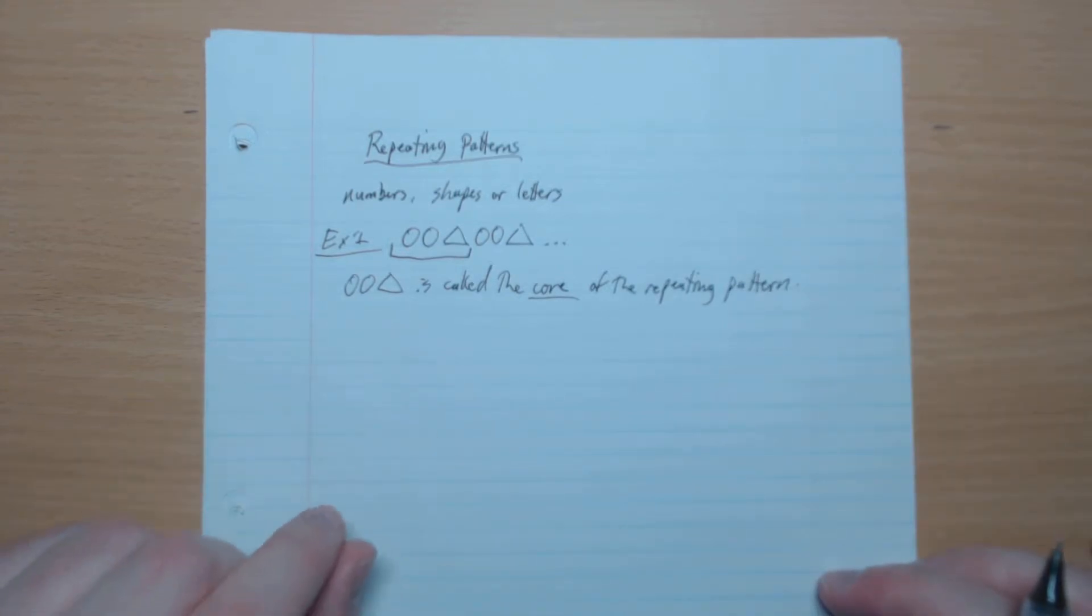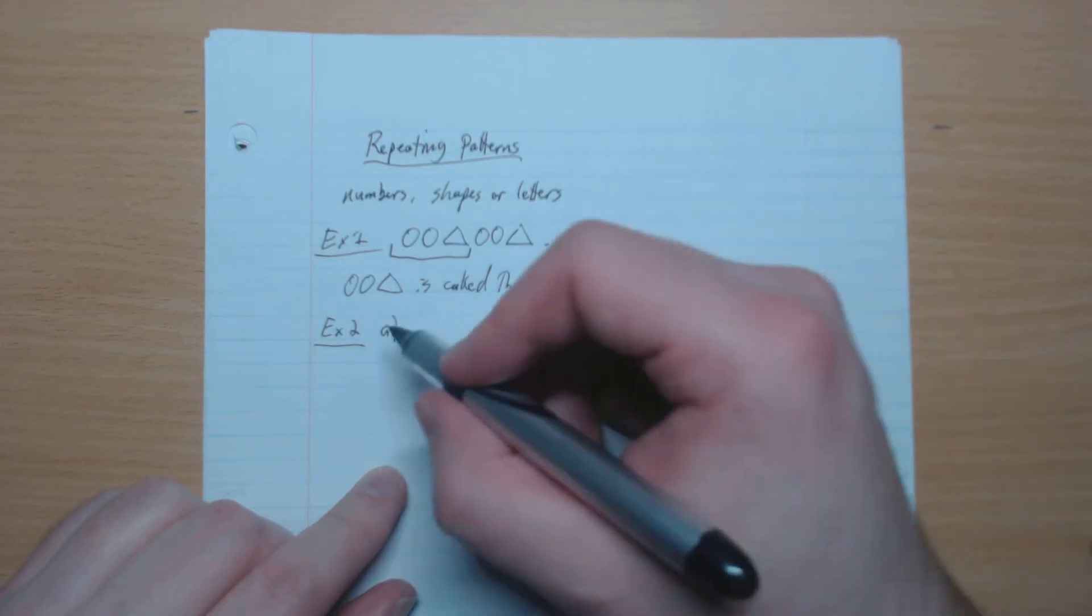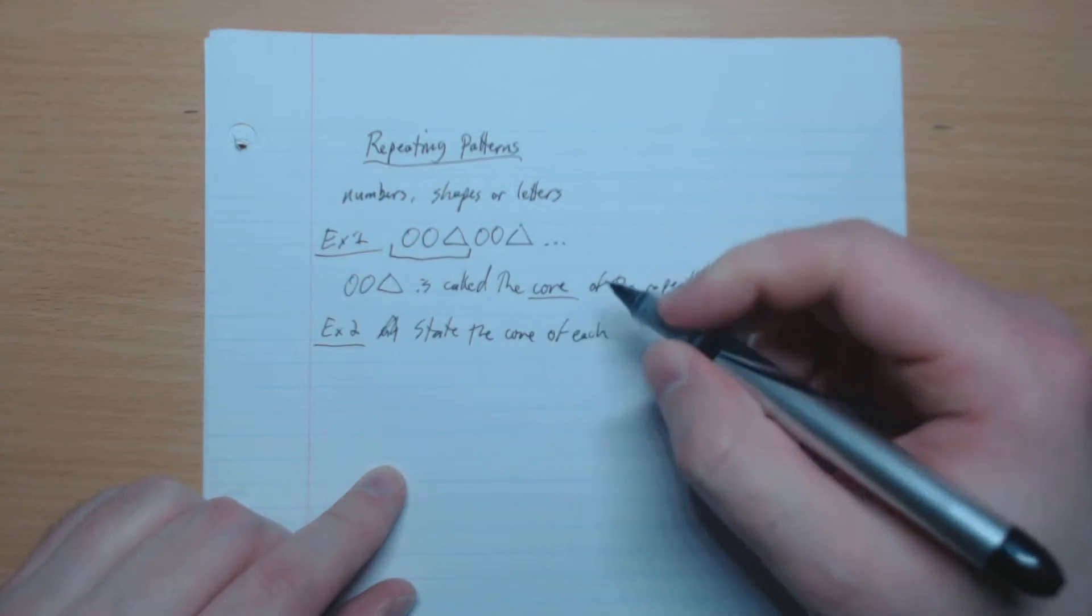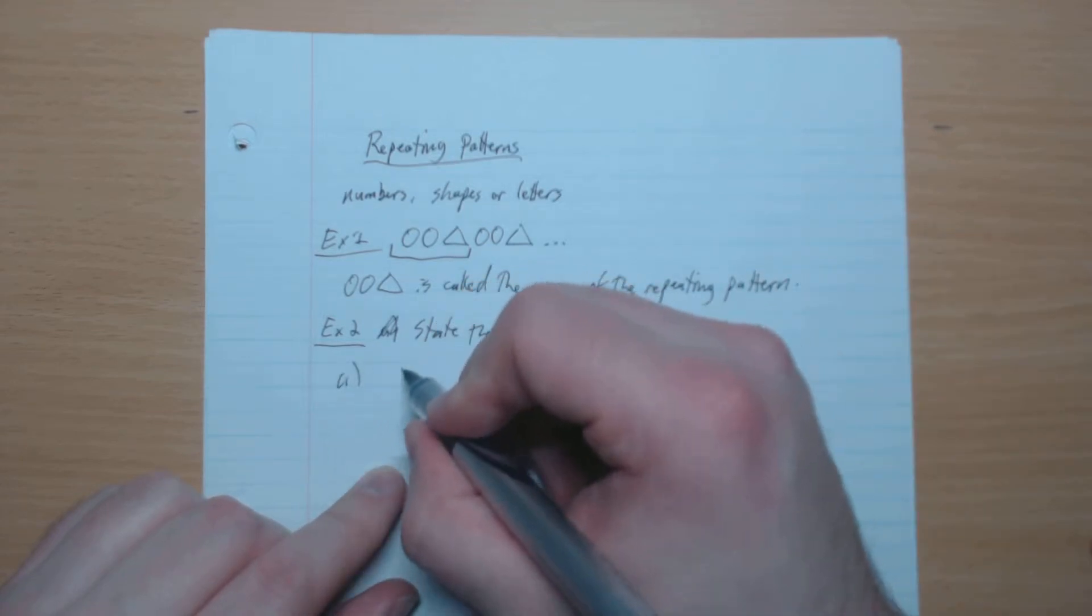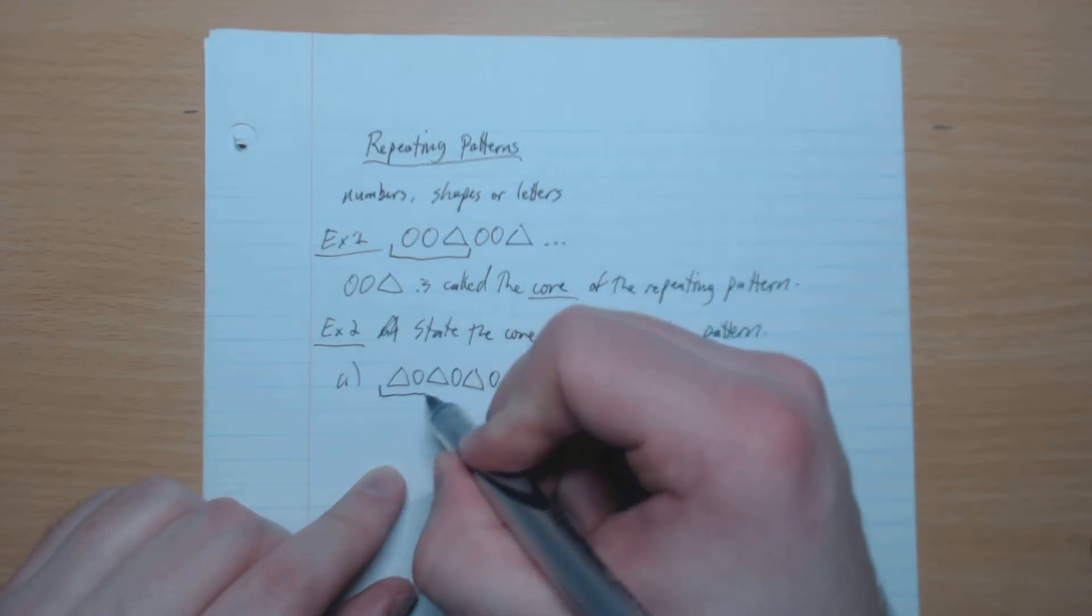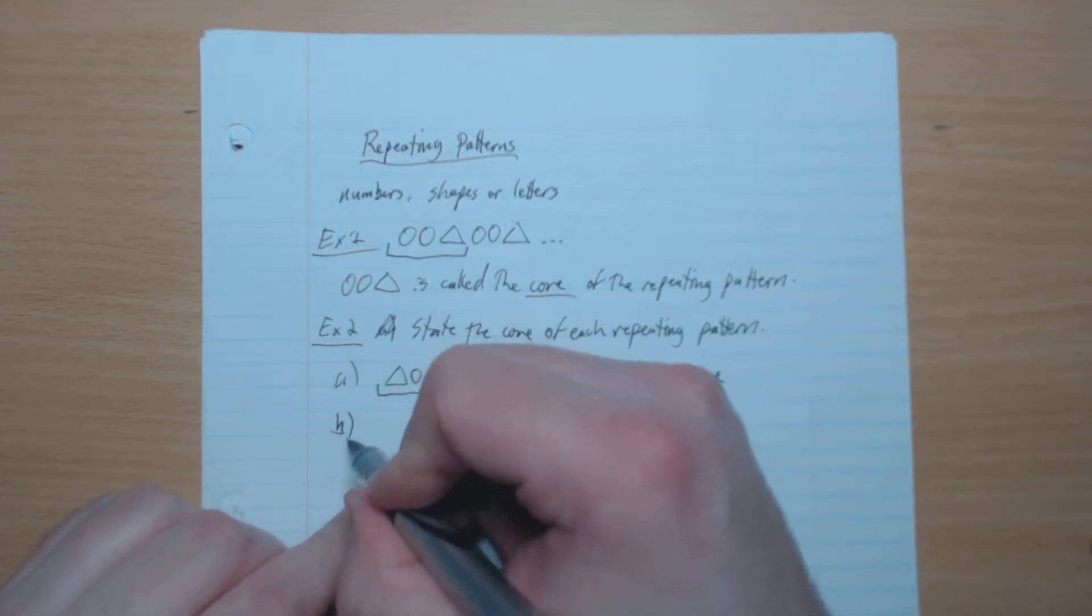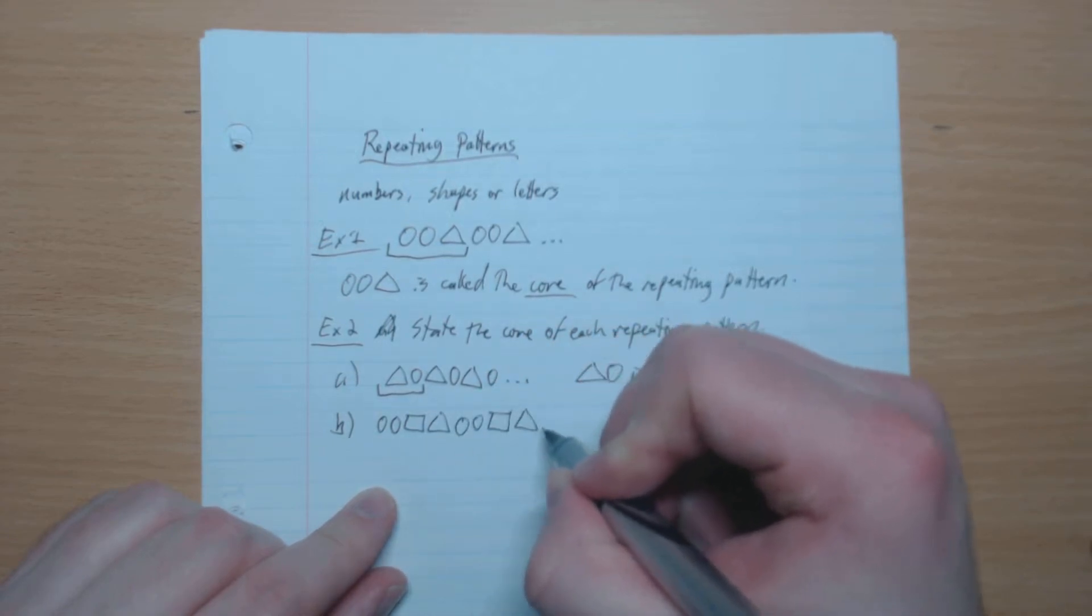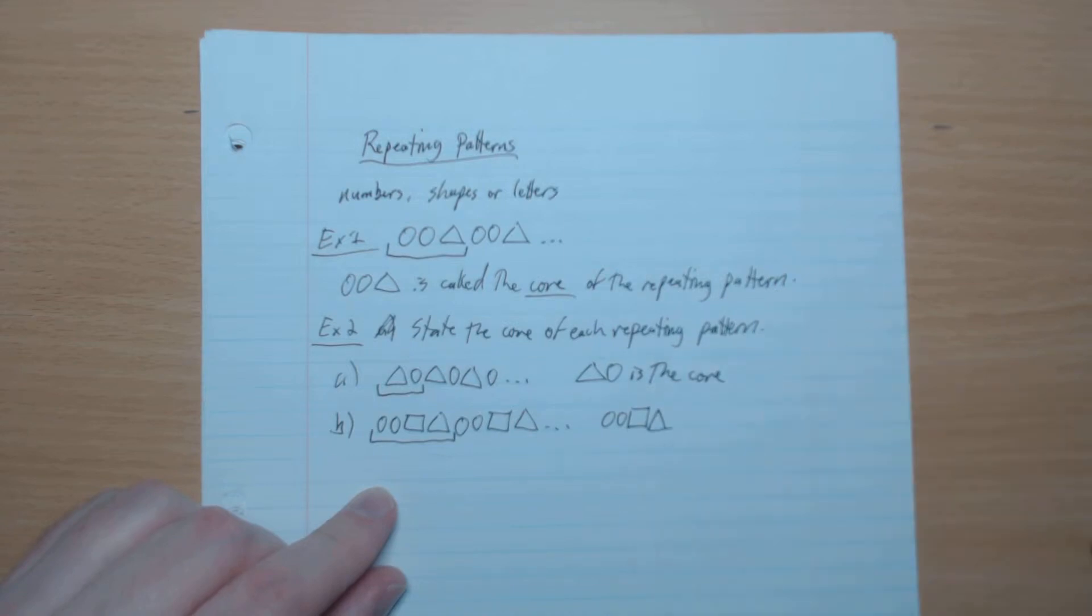The section that repeats itself. So example two - we're going to state the core of each repeating pattern. Part a, what do we got? Okay, so we see that just this here is what's repeating itself, so this is the core. Okay, so we see that this section here is repeating itself like that. So that is the core.